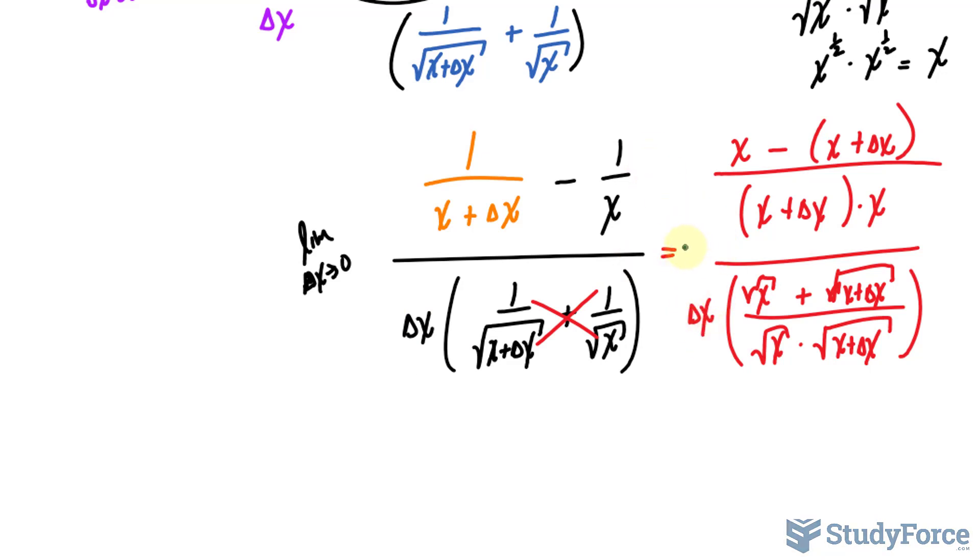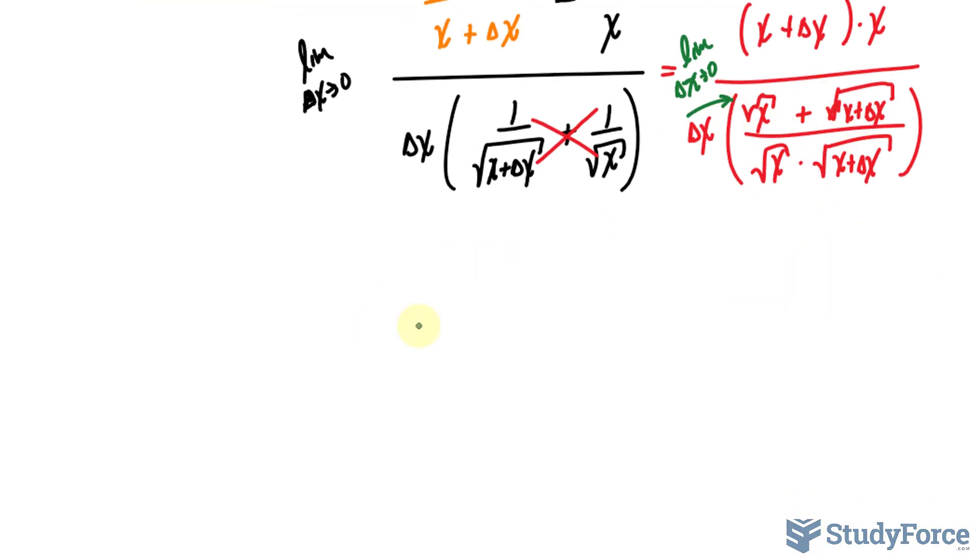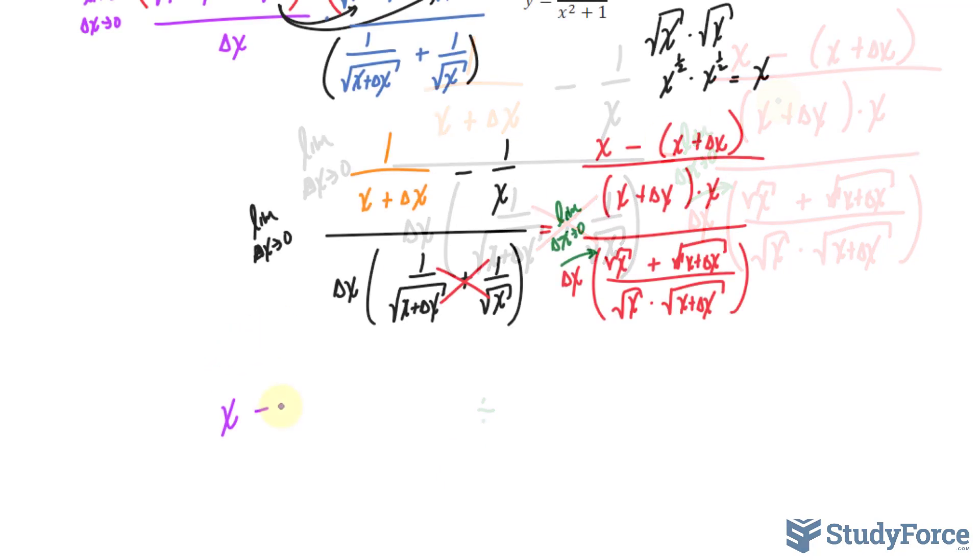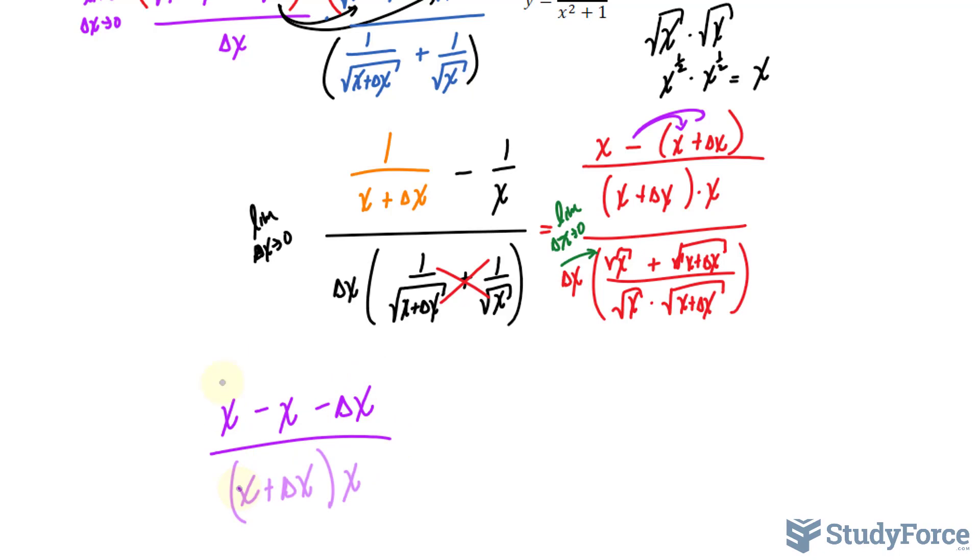I should have the limit symbol here as well. I'll multiply delta x into the top part of the fraction here. And at the same time, I'll rewrite this so that I have the division symbol. It just makes things easier for me personally. So I'll write that down here. I'll expand this as well. It will come in handy later. Notice that these two will cancel out.